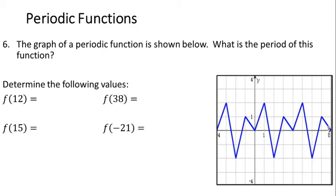Moving on to question 6, we're now on the topic of periodic functions. A graph of a periodic function is shown, and the first question asks for the period — the distance on the X axis to complete a full cycle before the function starts repeating. Starting at 0, the function goes up, then down, back up, and returns to 0, where the pattern repeats. Counting the X axis distance for that cycle gives us 1, 2, 3, 4 — it takes 4 units to complete the cycle, so the period is 4.